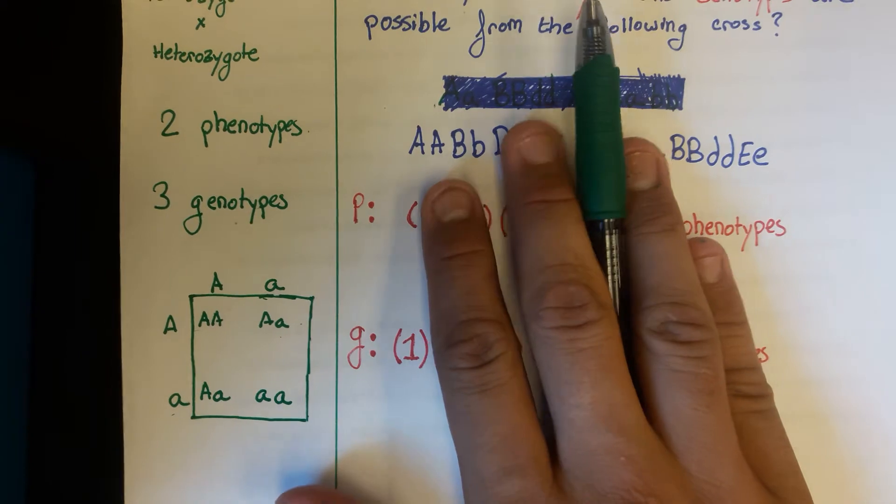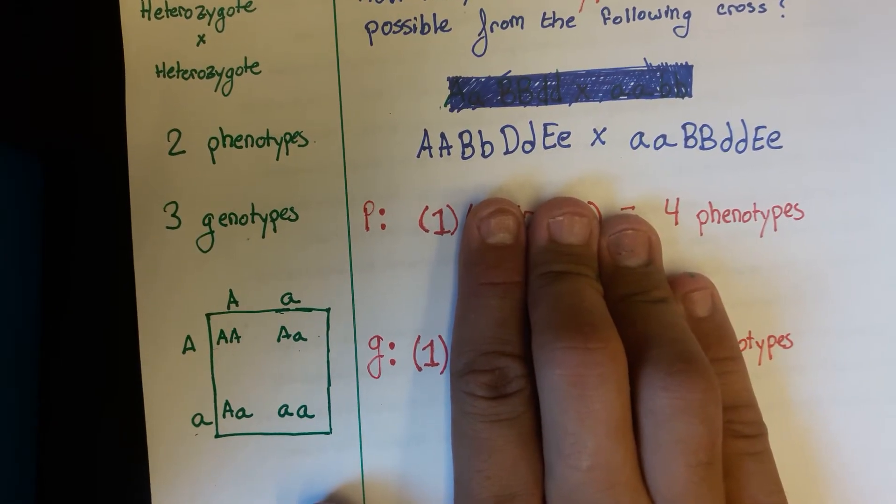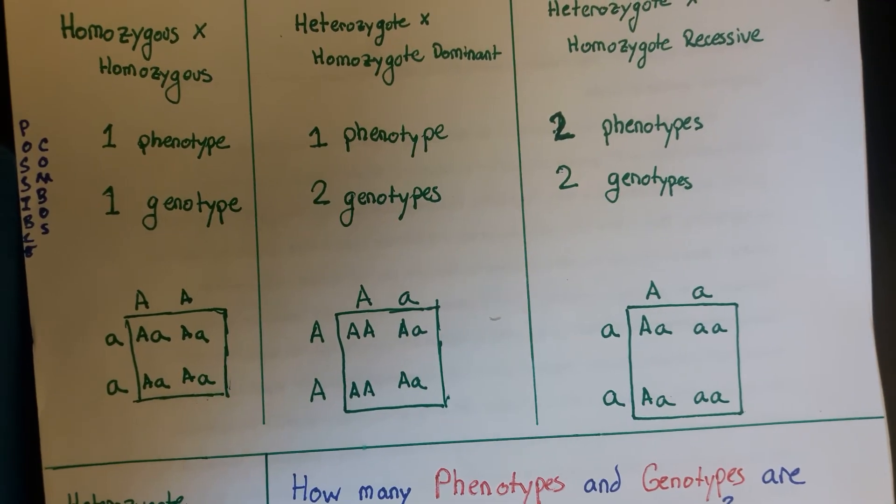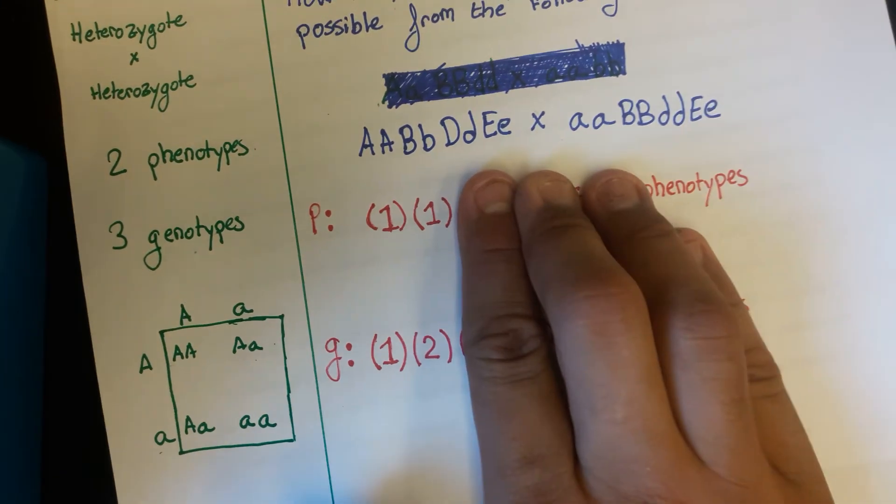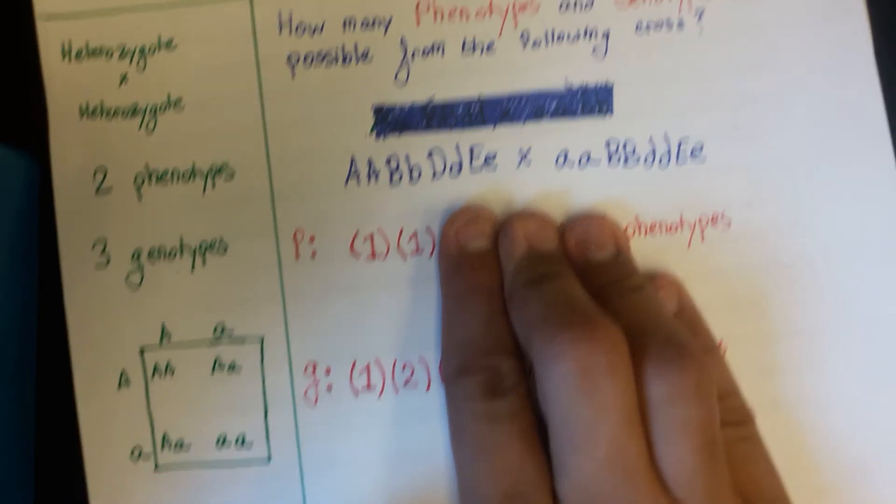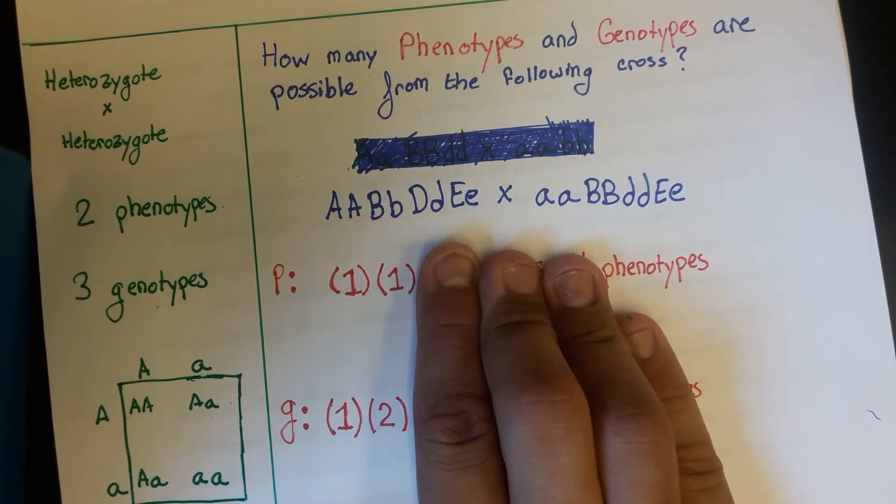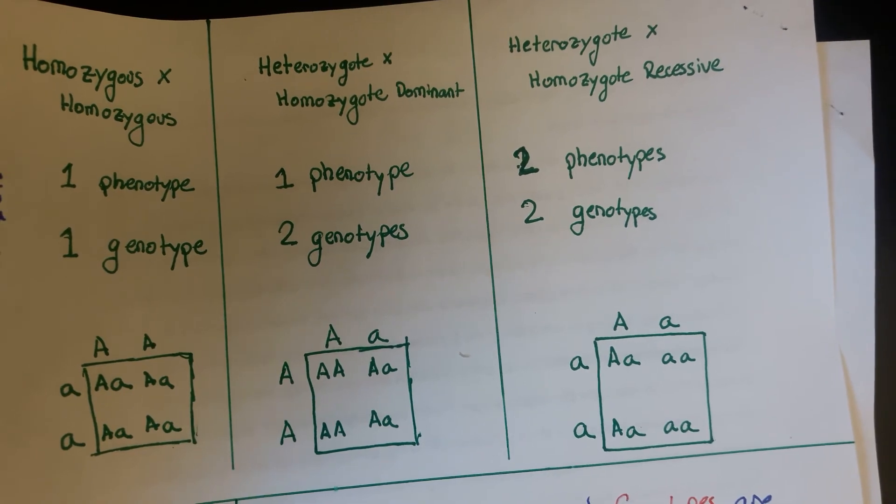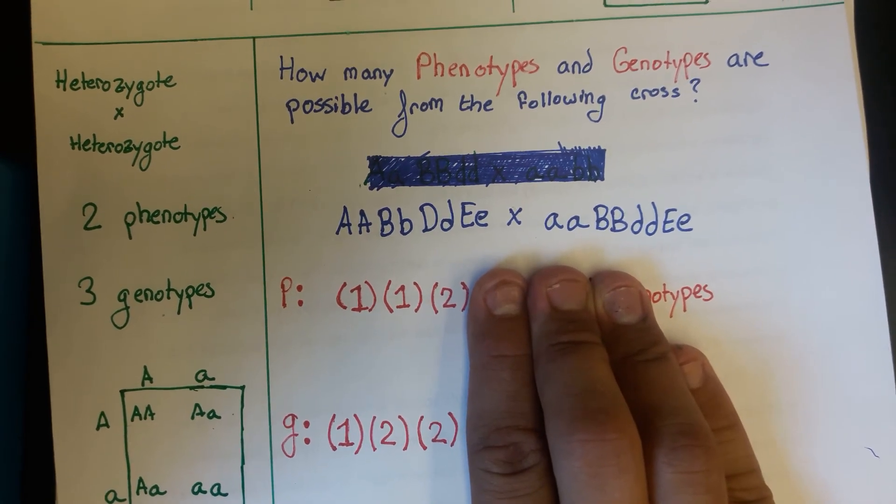Next, look at how the next cross is gonna be heterozygote at B with the homozygote dominant at B. That's that second case. Just bring that number down, one and two. So one phenotype, two genotypes. So one phenotype, two genotypes. Look at D. At D we have a heterozygote crossed with the homozygote recessive. That's the third case. So there's two phenotypes and two genotypes. Put that into the formula, two and two.